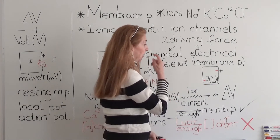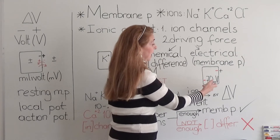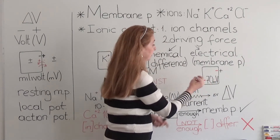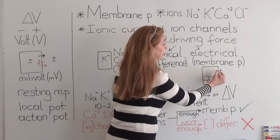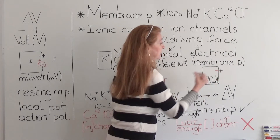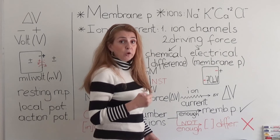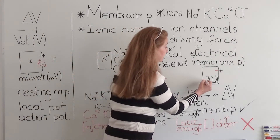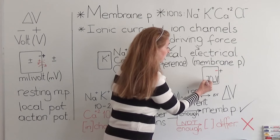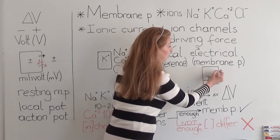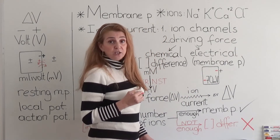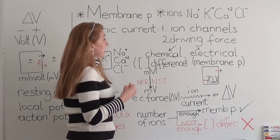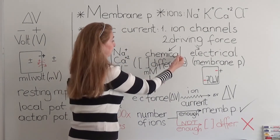Let's give an example. If the membrane potential is minus 70 millivolts, this means that the inside of the membrane is 70 millivolts more negative compared to the outer side. So the sign always refers to the inner side of the cell membrane. The second force is a chemical force.